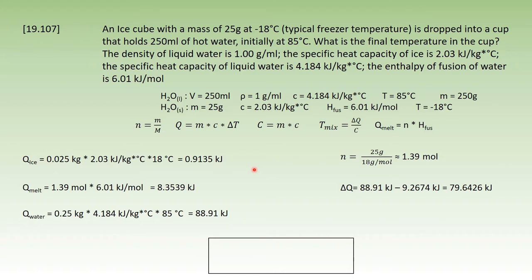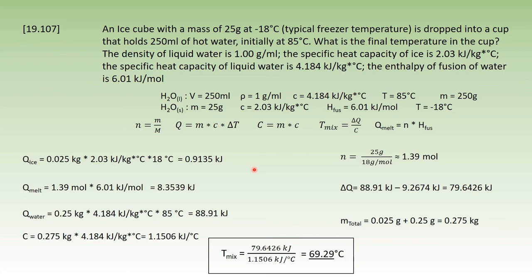Just one more thing before we can answer the question. The thermal capacity needs to be calculated by multiplying the total mass with the specific heat capacity of water. Now finally, the mixing temperature: we divide the remaining thermal energy by the thermal capacity and end up with 69.29°C.